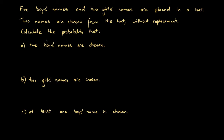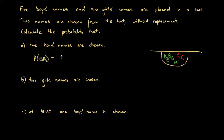Let's look at Part A: what's the probability that two boys' names are chosen? Let's draw a hat with five boys' names in green and two girls' names in red. The product rule says the probability that two boys are chosen is the probability that a boy is chosen on the first draw, multiplied by the probability that a boy is chosen on the second draw.